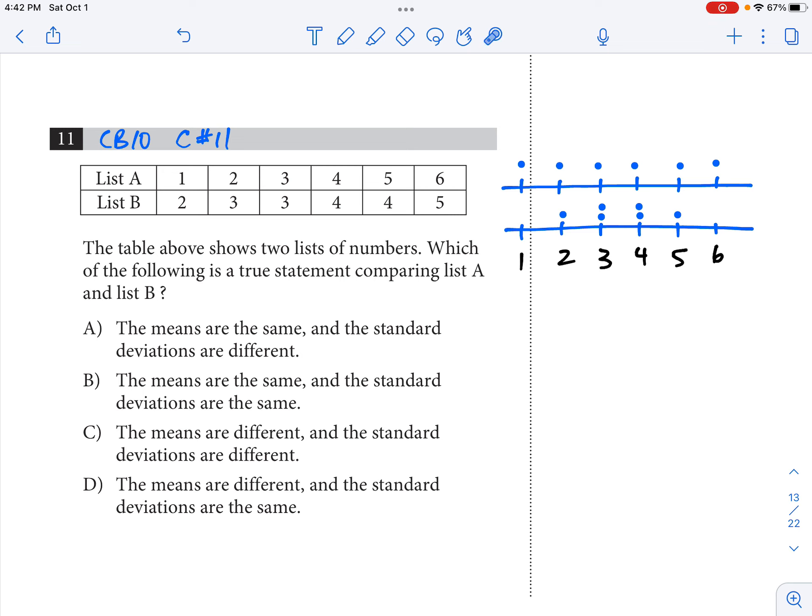The table shows two lists of numbers. I've got List A here with the numbers 1, 2, 3, 4, 5, 6. I just drew a little number line here and put dots representing those six numbers that are in List A. And I did the same thing for List B. So we have 2, 3, 3, 4, 4, 5.